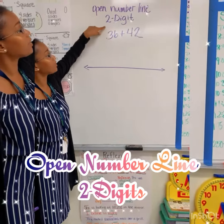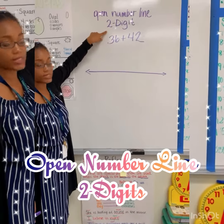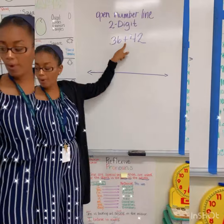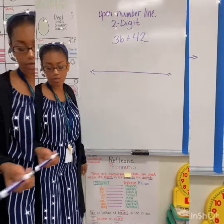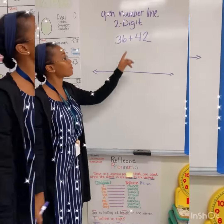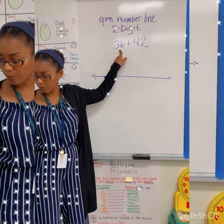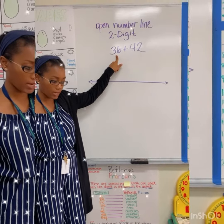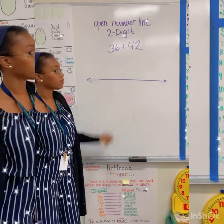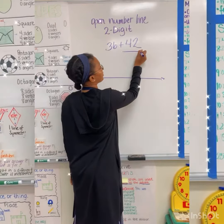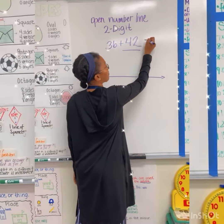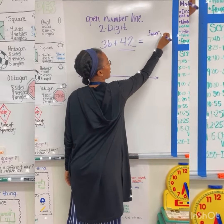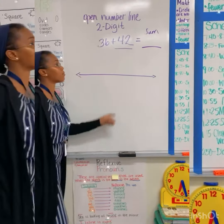We have the open number line, two digits, and we're looking at addition. I always like to start with the larger number — therefore I have to jump fewer spaces. So what's my larger number here? 42! So remember in addition, we are always looking for the what? The sum.